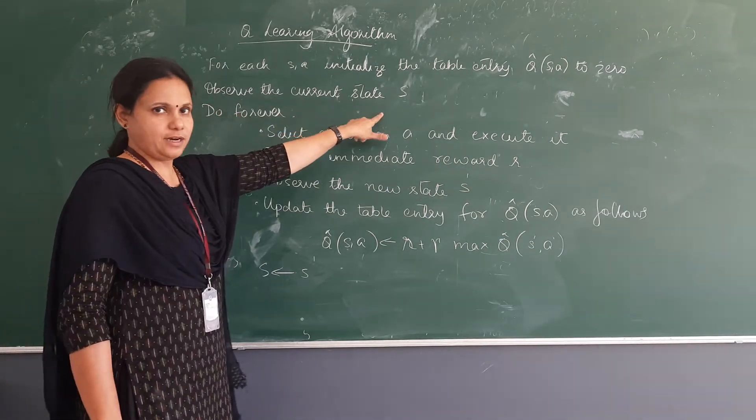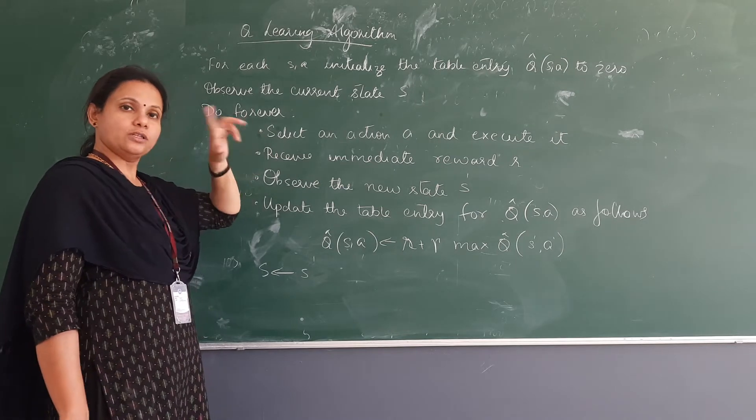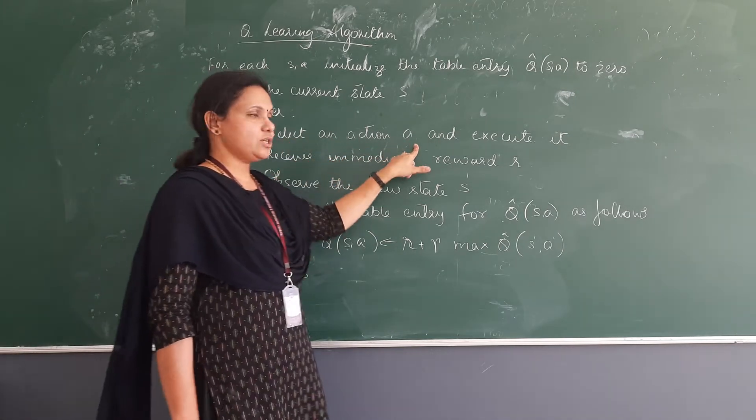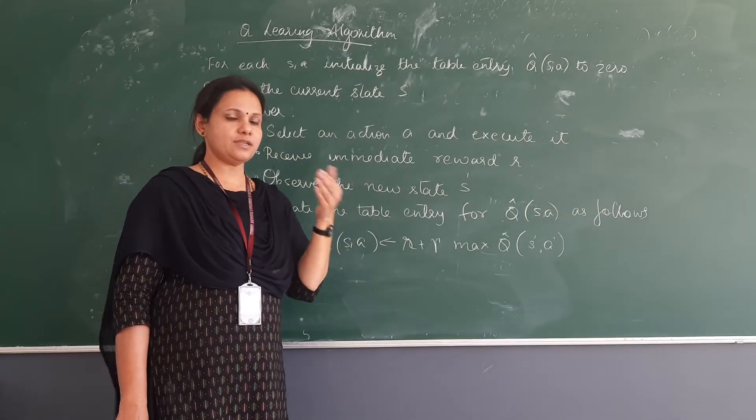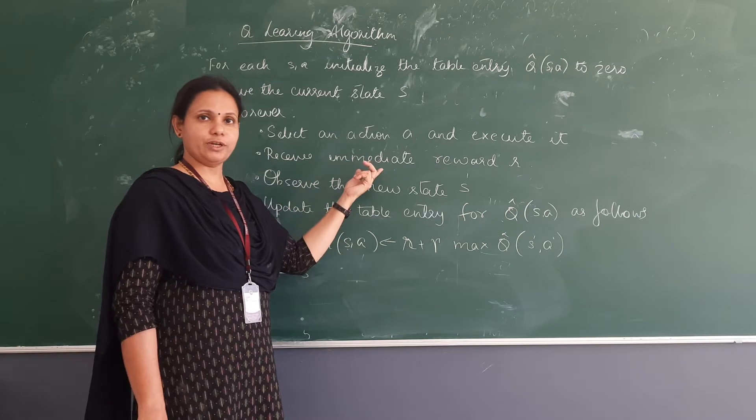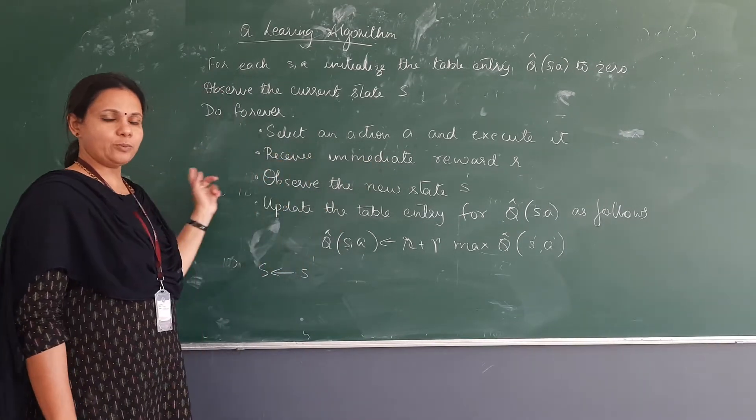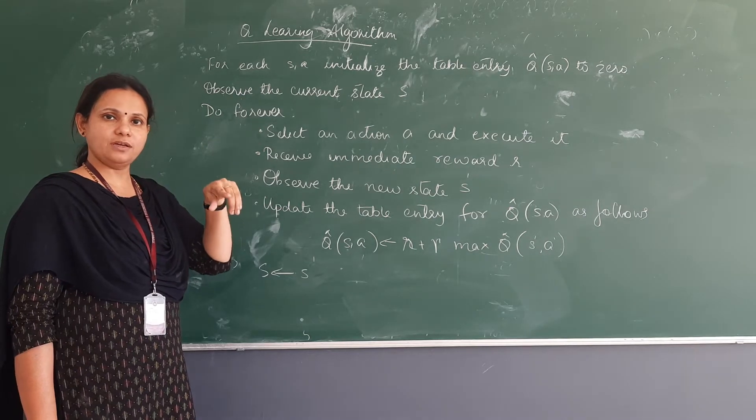Then observe the current state S. We took one state of that. Then forever, means until all the states are over, select an action A and execute it. So receive the reward. If I am going to the next state, I see that if there is a reward, I will get an immediate reward for that. So we move from state 1 to state 5. Then I know that I get a reward because 5 is the goal state.